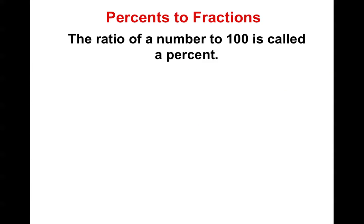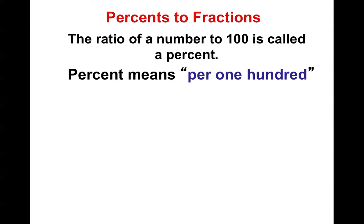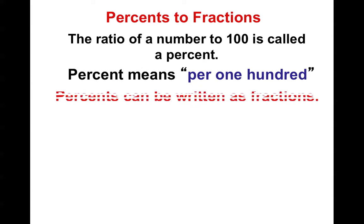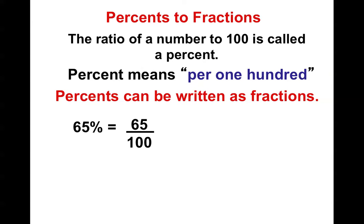So a percent, by definition, is the ratio of a number to 100. Percent means per 100. So percents can be written as fractions — if I have 65%, that means I got 65 over 100. Percents are a very special fraction. Every percent has a denominator of 100.